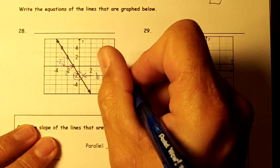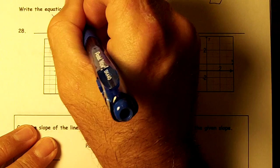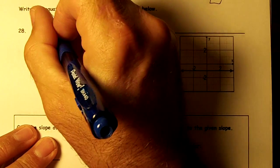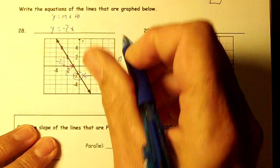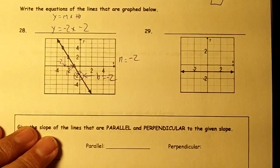So our slope, our m, would be negative 2, wouldn't it? So we're going to put y equal mx plus b. Our slope is negative 2, and our y-intercept is also negative 2. So y equal negative 2x minus 2.